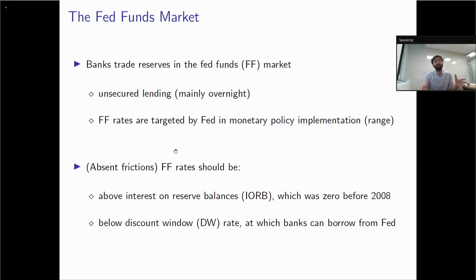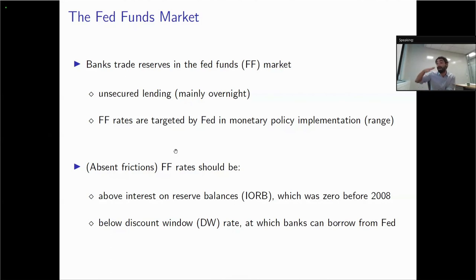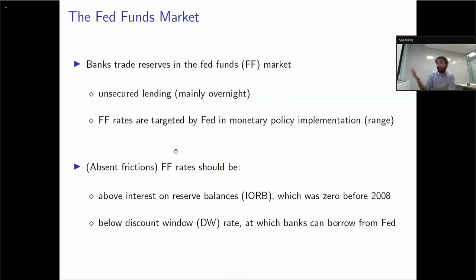The market in which reserves are traded is called the fed funds market in the US — consisting of unsecured lending, mainly overnight. The rates at which reserves are traded, called fed funds rates, are the rates targeted by the Fed in monetary policy implementation. Theory says these rates should always be above the interest paid on reserve balances — since no bank would lend at a rate below what it earns on its account — and below the discount window rate, since no bank would borrow from another bank at a higher rate than from the Fed.